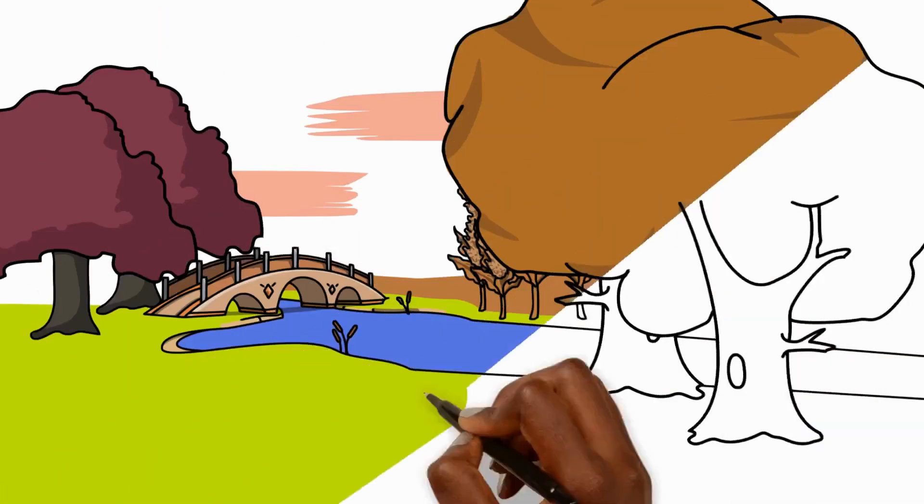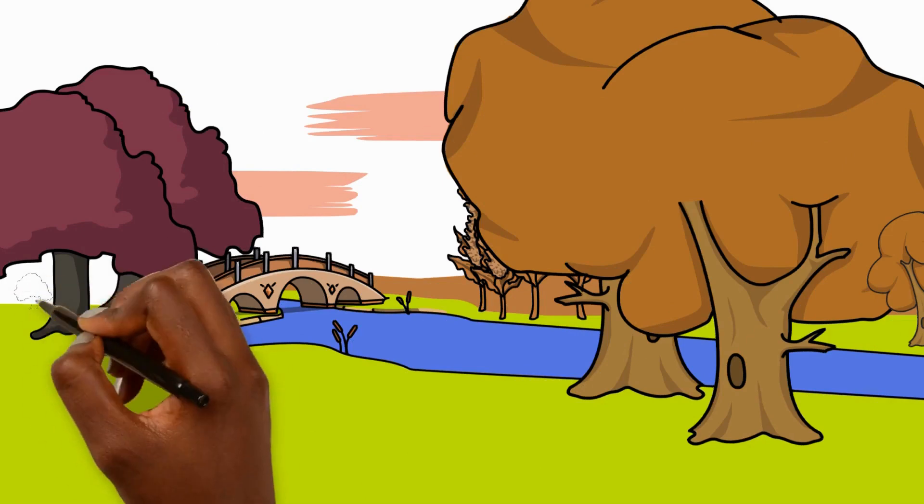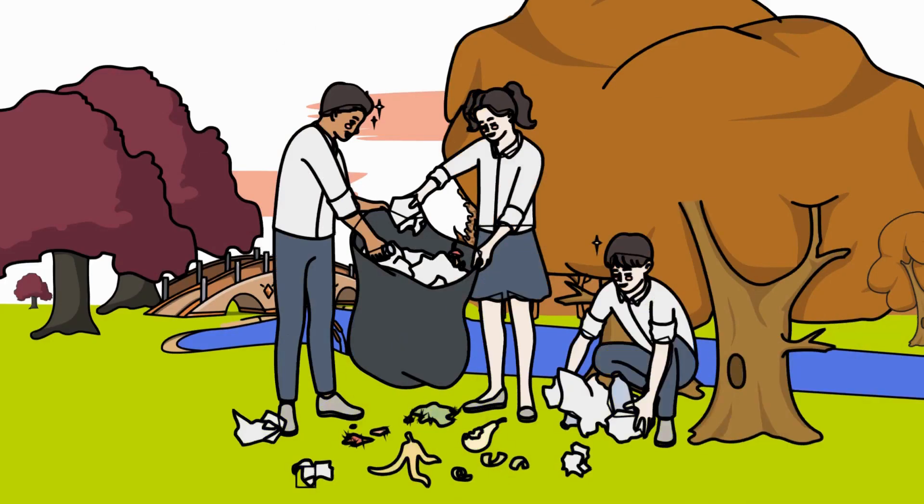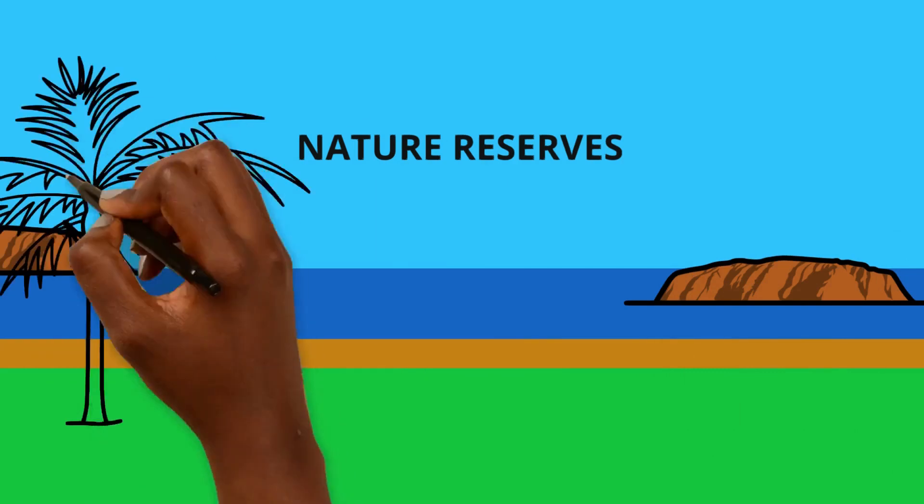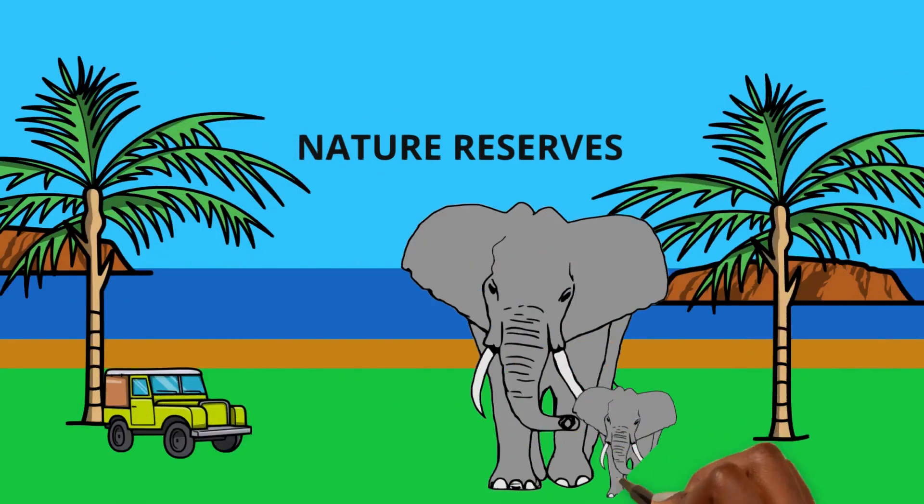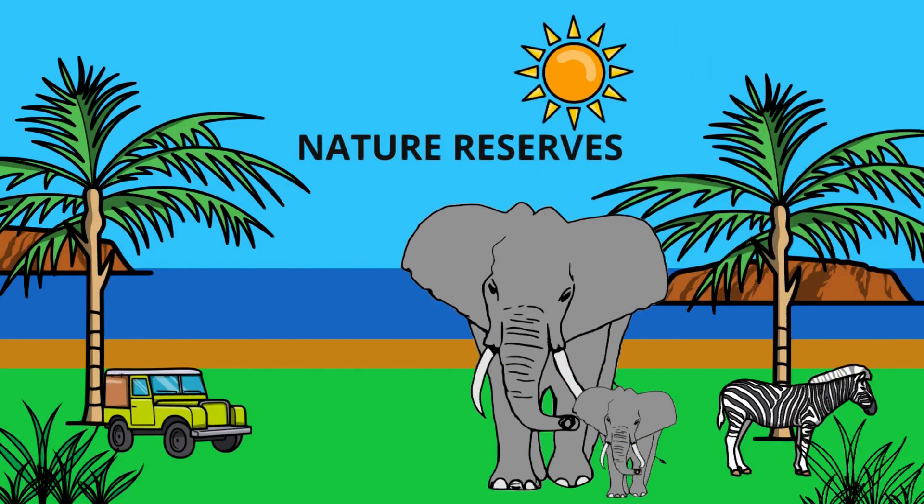But we can make a difference. By replanting trees, clearing up litter and using nature reserves we can reduce the damage we've caused to plant and animal habitats. We can all take action today.